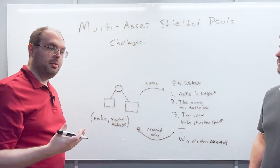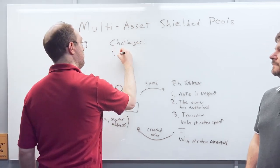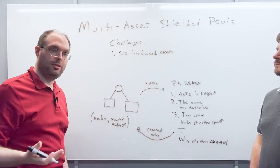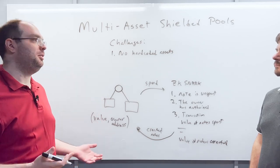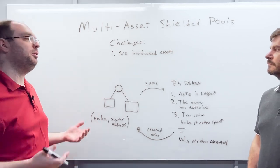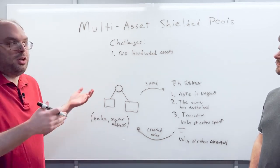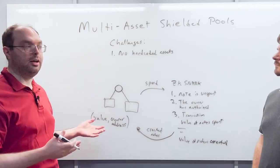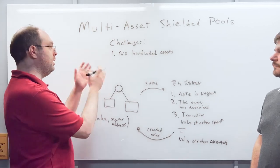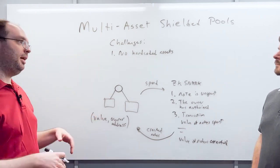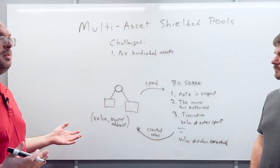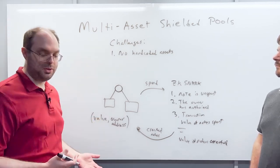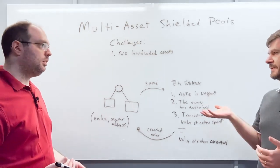The first challenge is that we don't want to hard-code assets. It's probably impossible to make a complete list of all assets you'd ever want in the shielded pool, and it's also not practical to hard-code a long list into a ZK-SNARK circuit. We want a protocol that is agnostic to how many assets might be in the shielded pool — even supporting assets that may not exist yet — and that can create assets dynamically.